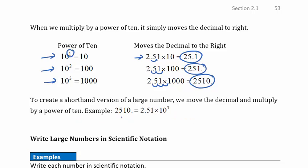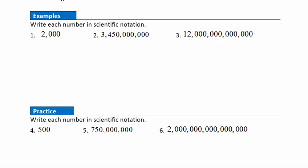To write a large number in scientific notation, we move the decimal and multiply by a power of 10. Example 1: to write 2000 in scientific notation, we want one digit to the left of the decimal — that's 2.0. Starting from the decimal in 2.0, we need to move it three places to the right to get 2000, so we multiply by 10 to the third power.